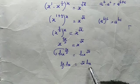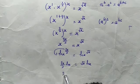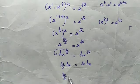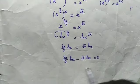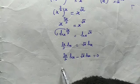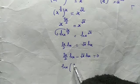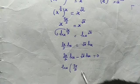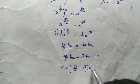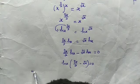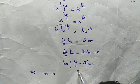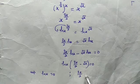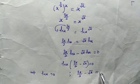Now let's subtract root x times the natural log of x from both sides. So we have 3x over 2 times the natural log of x, minus root x times the natural log of x, equal to 0. From here, we have a common factor, which is the natural log of x, giving us ln(x) times the bracket 3x over 2 minus root x, equal to 0.